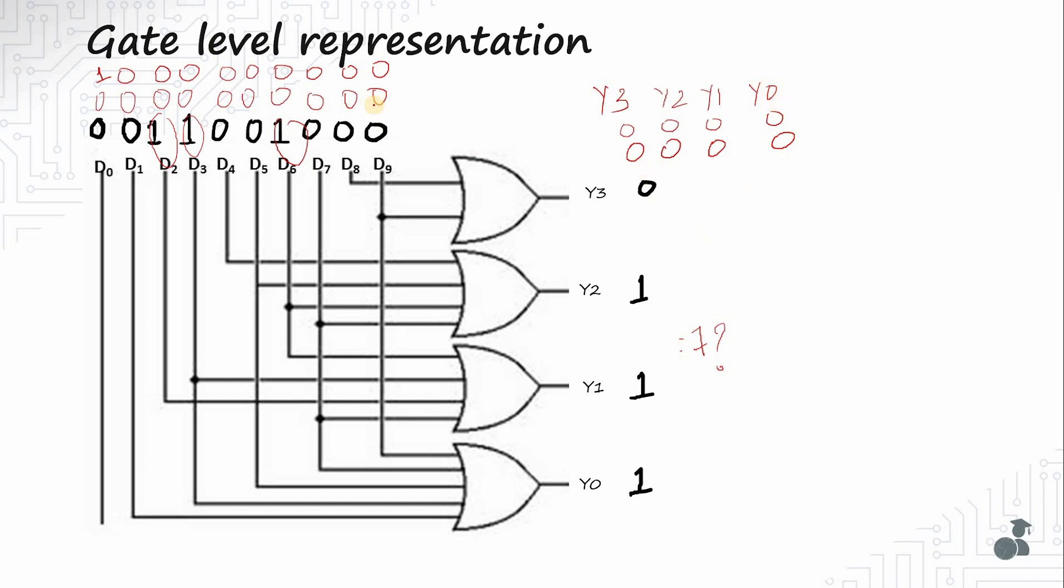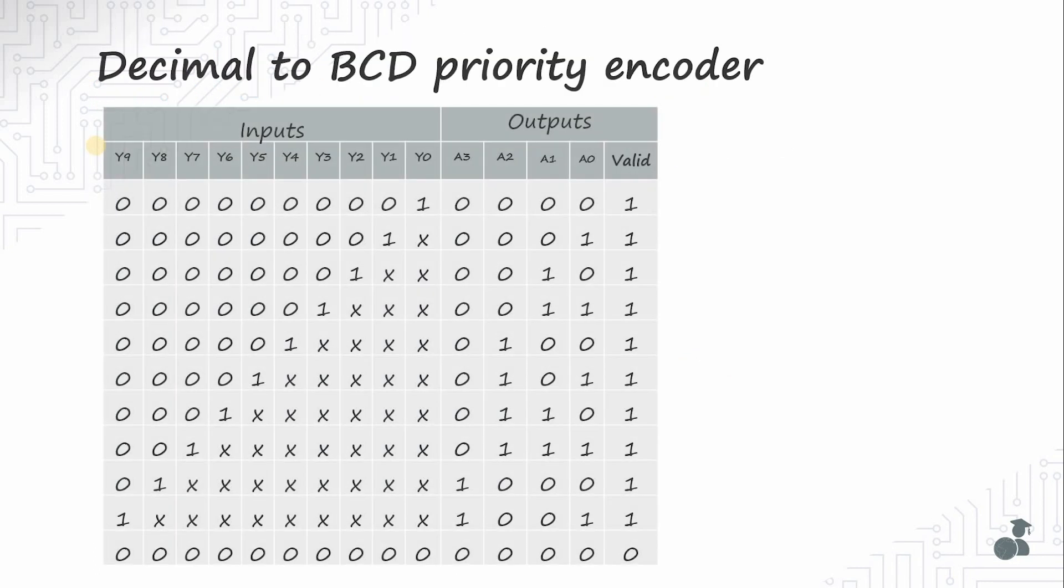Certainly there needs to be a fix to both these problems: pressing multiple keys at a time, and distinguishing if no key is pressed or if the 0th key is pressed. That's where a priority encoder comes to play.